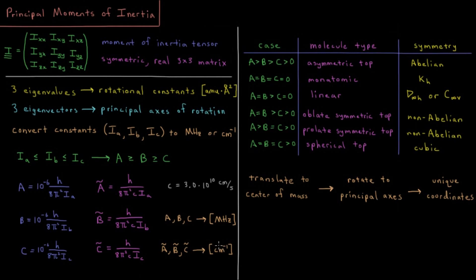Typically for small diatomic molecules you might see rotational constants that are about one to twenty wavenumbers, but as molecules get bigger and bigger these values are going to get smaller and smaller. We have those three unique values for our rotational constants in those unit systems.